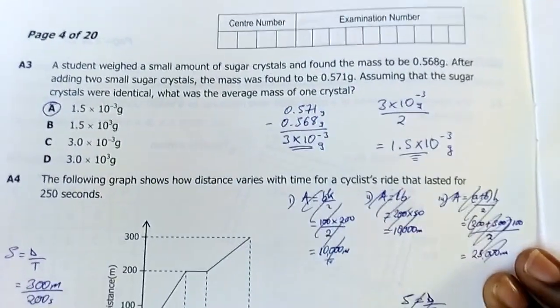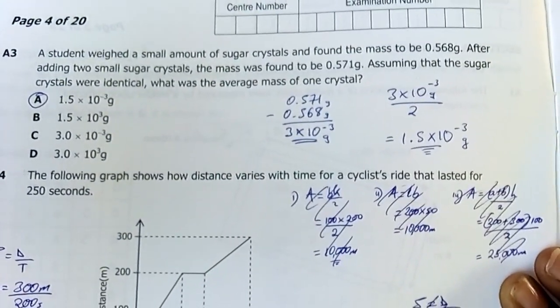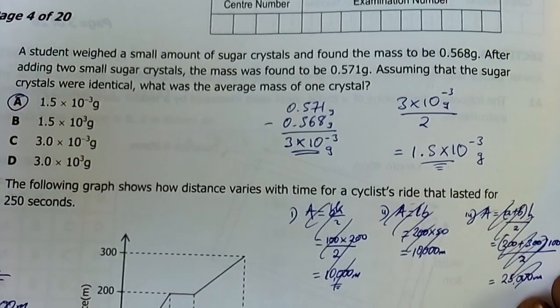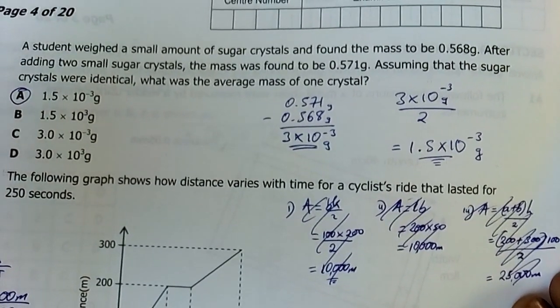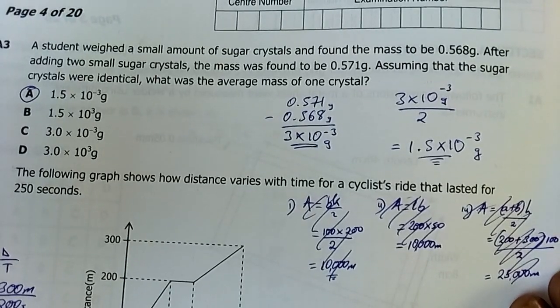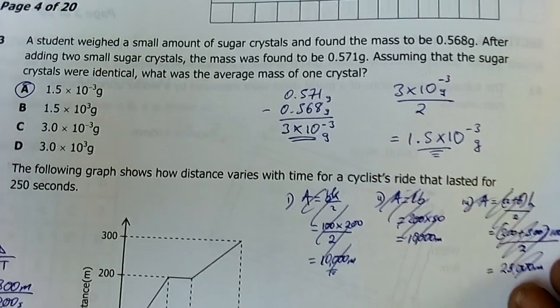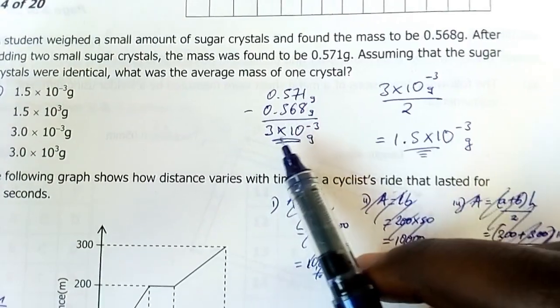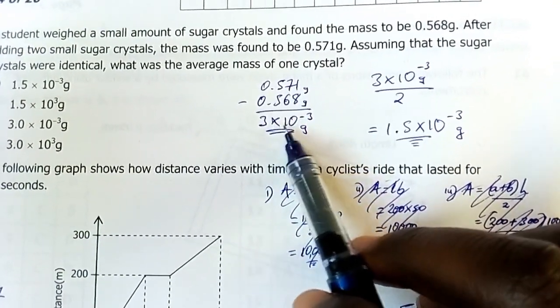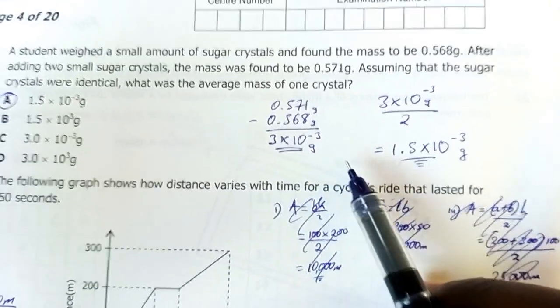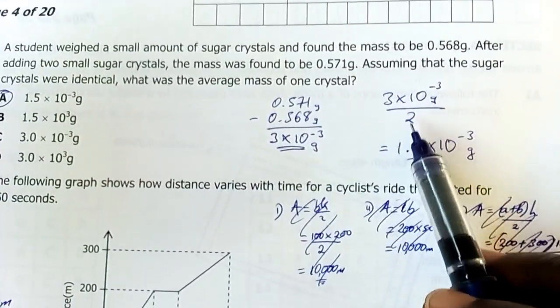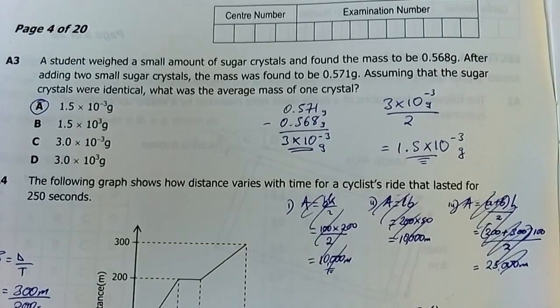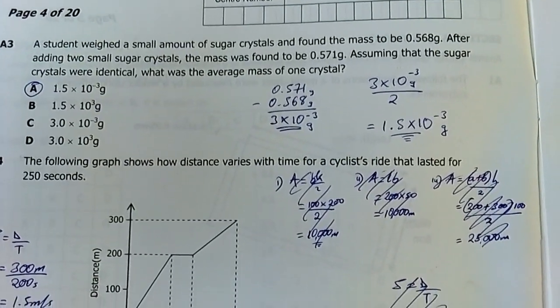Number three: A student weighed a small amount of sugar crystals and found the mass to be 0.568 grams. After adding two small sugar crystals the mass was found to be 0.571. Assuming that the sugar crystals were identical, what was the average mass of one crystal? I divided the difference after addition of those two crystals. The change in mass was 3×10^-3 grams. Since there were two of them I divided that difference by two and it gave me this. My answer was A: 1.5×10^-3 grams.